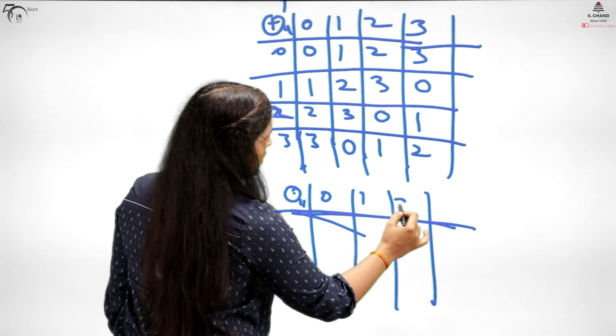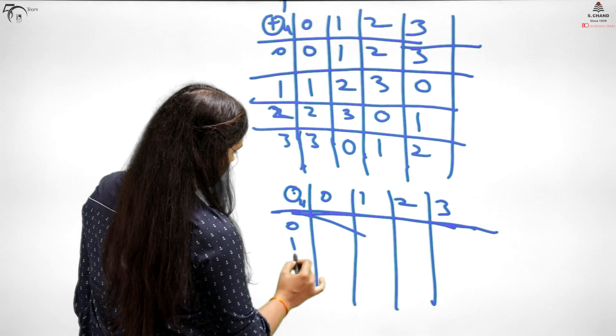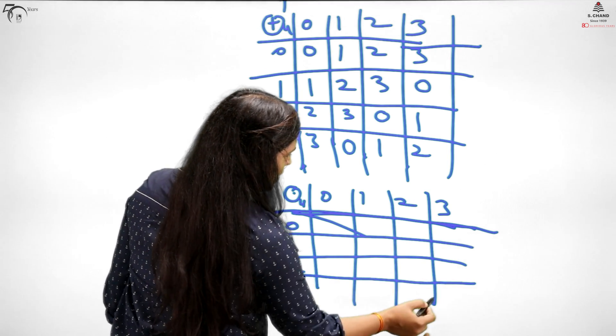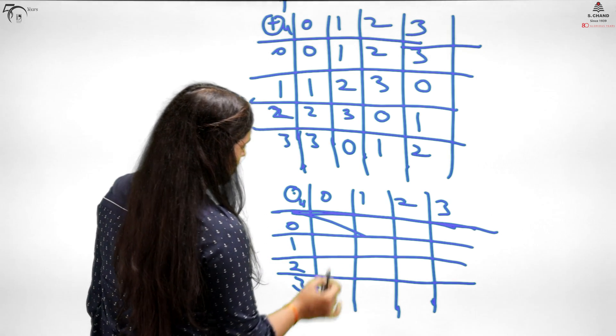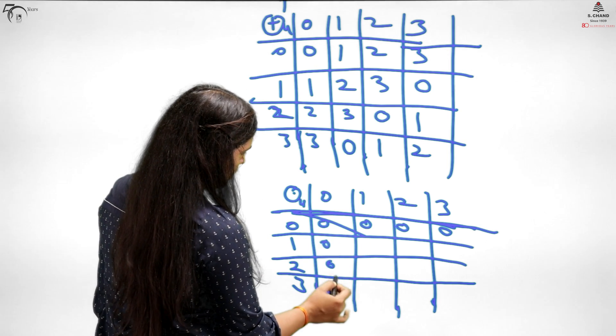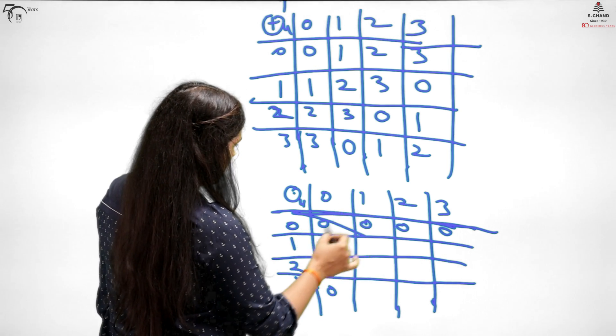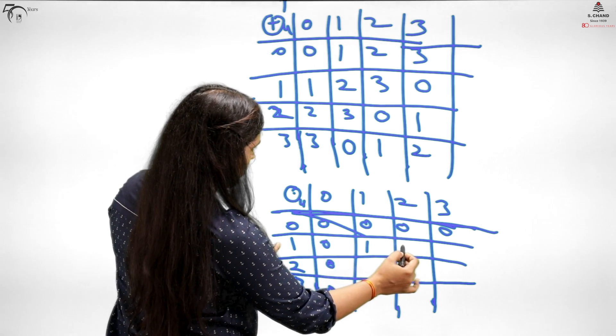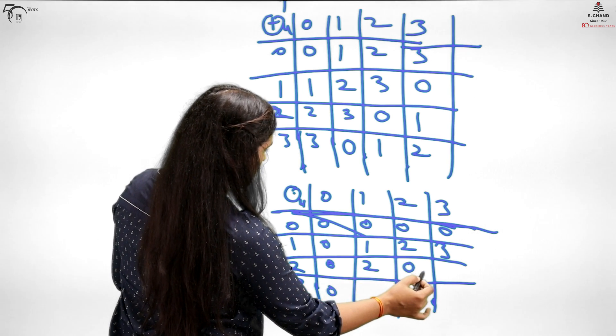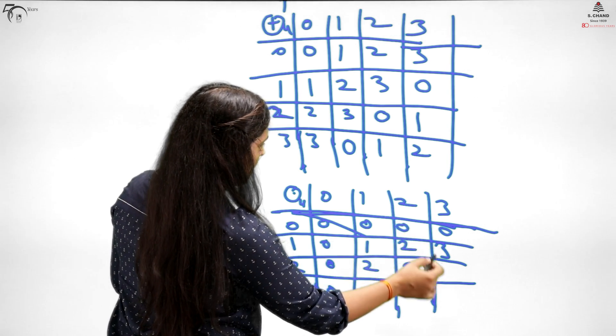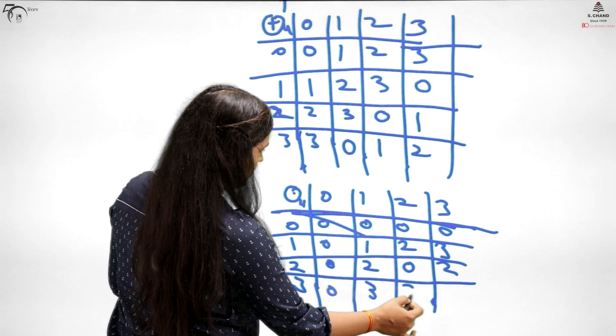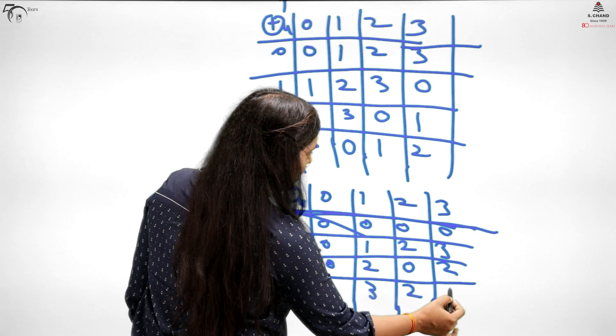With modulo 4, elements 0, 1, 2, 3. When you multiply, first row is all 0s. Then 0, 1, 2, 3. Then multiplying by 2: 2 times 0 is 0, 2 times 1 is 2, 2 times 2 is 4 so remainder 0, 2 times 3 is 6 so remainder 2. Then 3 times 0 is 0, 3 times 1 is 3, 3 times 2 is 6 so remainder 2, 3 times 3 is 9, divide and get 8 plus 1.